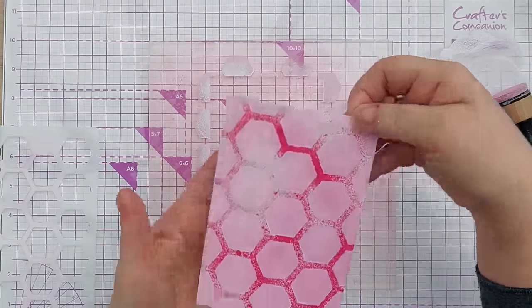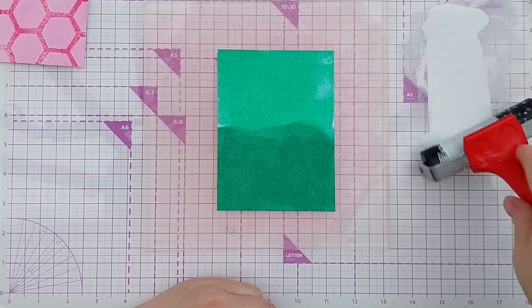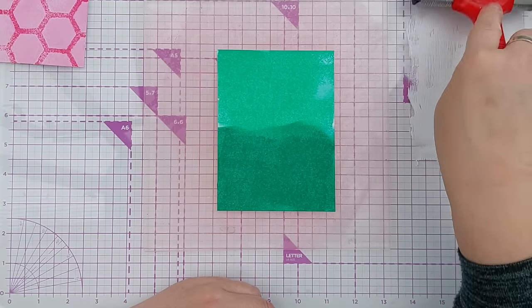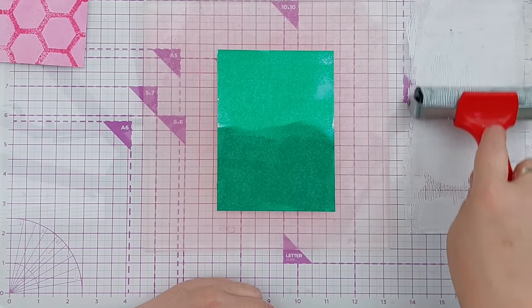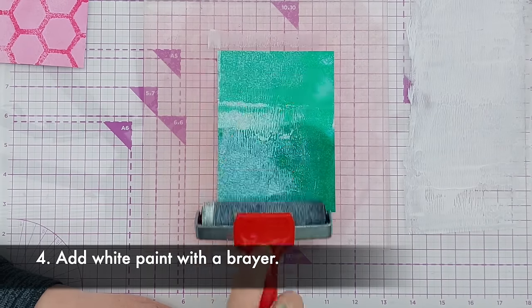You don't have to use a stencil though, you could just add white paint over your background without a stencil. You could brush it on with a paint brush or you could do technique number four and that is to add white paint with a brayer.